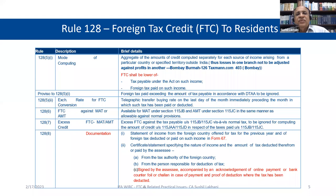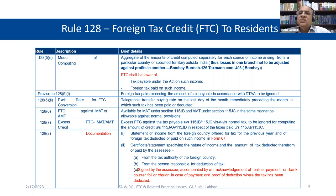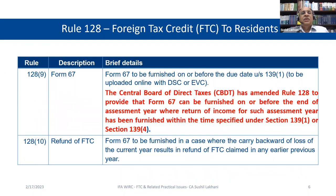The foreign exchange conversion for FTC uses the TT buying rate on the last day of the month immediately preceding the month in which tax was paid or deducted. FTC can be claimed even against MAT or AMT. However, the rules clearly say that excess FTC — after claiming for MAT or in case of a loss — cannot be carried forward. In India, excess FTC is lost.